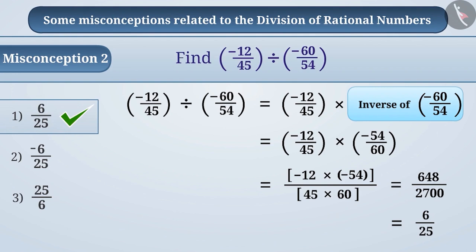Some children make a common mistake regarding signs. For example, they think that the result of two negative numbers will always be negative, so they put a minus sign in the result. This gives them the result -6/25, which is wrong.